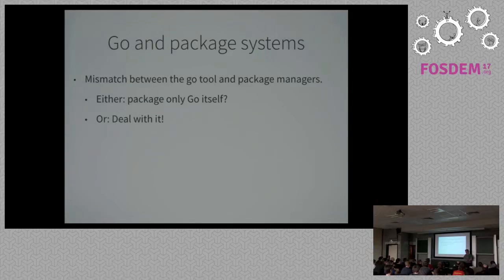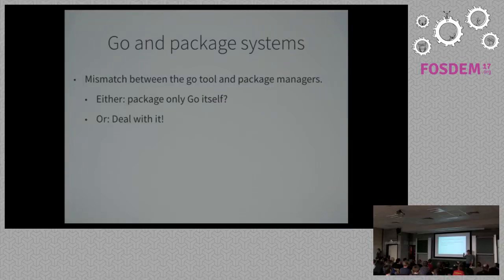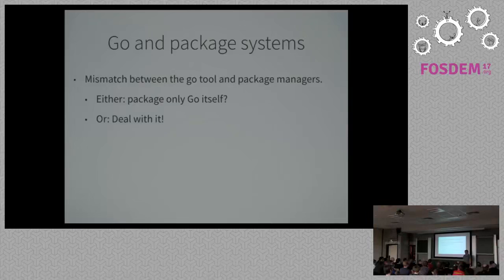There are two possible approaches to this mismatch. One is to basically ignore the ecosystem — only package Go itself and tell the user to just run go get to get their binary. In fact, that is what the people from the Go team have recommended to me, but I think that's unsatisfactory. At some point there is software written in Go that somebody wants to run, and you don't want them to be special snowflakes — you want them to be packages like all the rest of your system. In pkgsrc, for example, we have a linter called pkglint that's written in Go, so it's actually become quite an important topic for a bunch of developers.